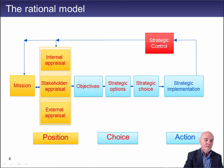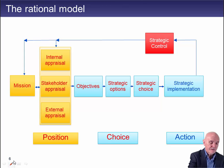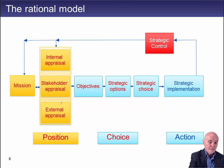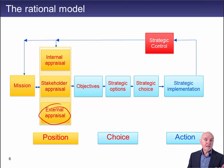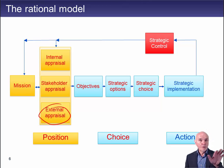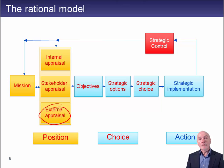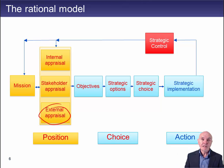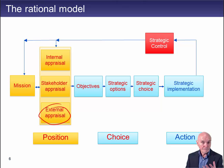If we look first at the position analysis, this is looking at what's happening externally. For example, you should take into account what the economy is doing. If the economy seems to be booming, maybe your strategy is to open another factory or open up abroad. If the economy is going down, the strategy might be to sell off or lose capacity. There are many external things you have to take into account.